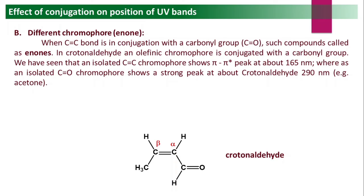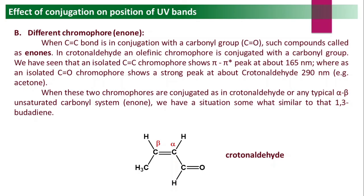In crotonaldehyde, the olefinic chromophore is conjugated with the carbonyl group. An isolated C=C double bond shows π→π* transitions at about 165 nm, while an isolated carbonyl group shows a strong π→π* peak at about 170 nm and an n→π* transition at about 290 nm (as in acetone). When these two chromophores are conjugated, the energy gap decreases — similar to 1,3-butadiene.